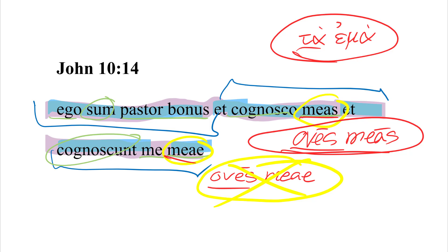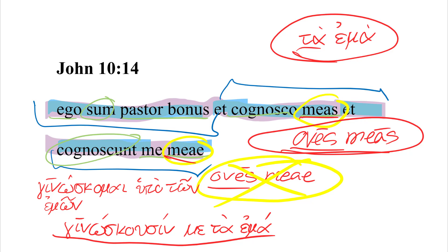Because what Erasmus had access to was a different textual tradition that does not read cognoscunt me meae, because when he was trying to represent the Greek tradition in a new Latin translation, the Greek tradition of the text that he had displayed a passive form of the verb, the text actually read as seen below. But Jerome had a different reading that read like this.